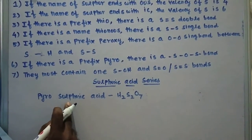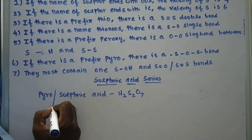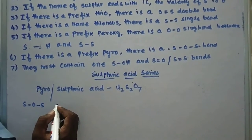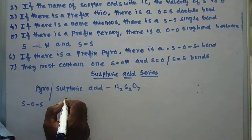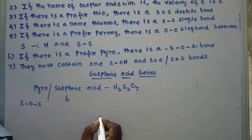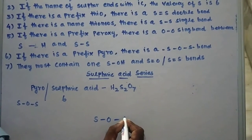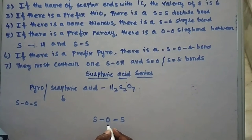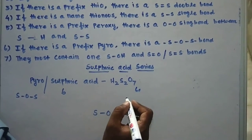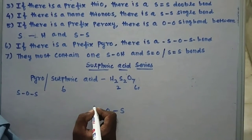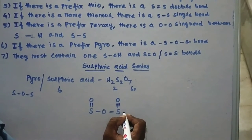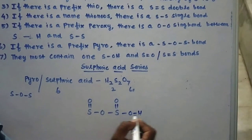Now we are going to see pyrosulfuric acid. Pyro means there is an S–single bond–O–single bond–S arrangement. Sulfuric means the valency of sulfur is 6. I will write the basic skeleton: S–O–S. There are 6 oxygen and 2 hydrogen atoms remaining. There is an S=O bond on each sulfur, and there is an OH on each side as well.